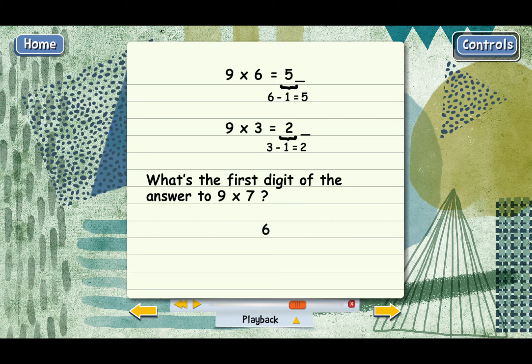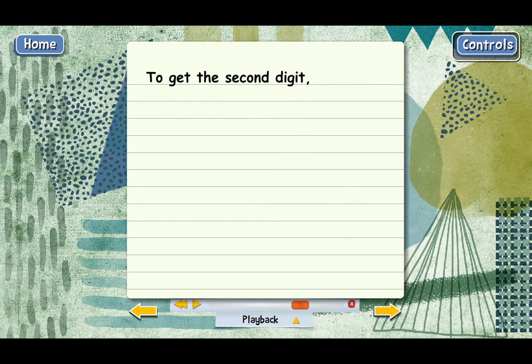What about figuring out the second digit? Well, that's pretty easy too. To get the second digit, you just take 9 minus the first digit. So if the first digit is 6, then the second digit has to be 9 minus 6, or 3. And that's why the answer to 9 times 7 is 63.